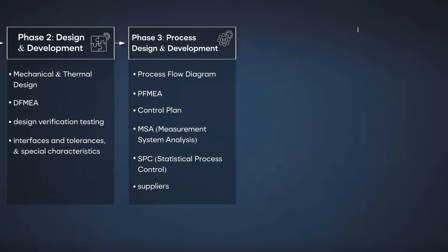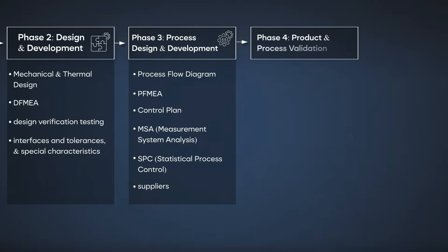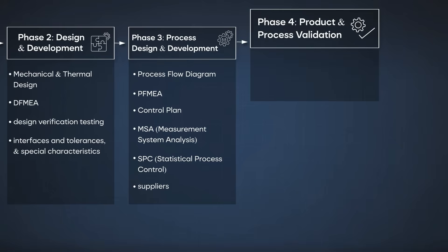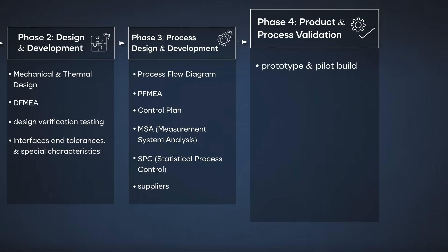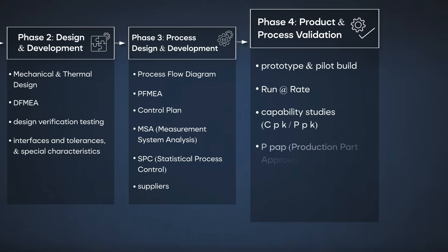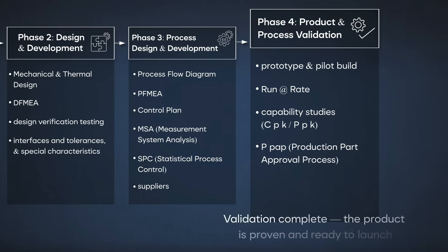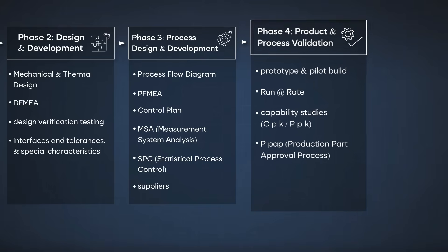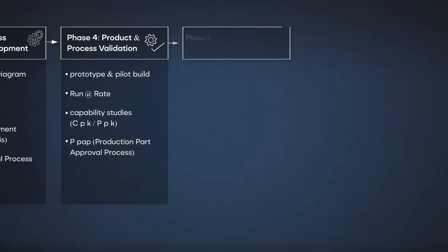Now we are ready to move on to phase four: product and process validation. Phase four is where we prove that both the product and the process work as intended before full-scale production. Here we conduct prototype and pilot builds to validate tooling, process flow and operator training, perform run-at-rate studies to confirm production capacity, execute capability studies for critical features, and compile and submit the production part approval process (PPAP) package to the customer. When this phase is successfully completed, the customer grants production approval and your organisation is ready for phase five: launch, feedback and continuous improvement.